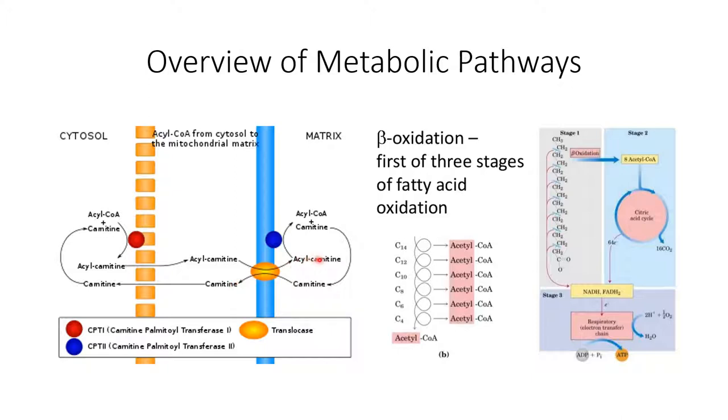Once inside the matrix, a second carnitine acyl transferase enzyme, CPT2, reverses the esterification between carnitine and fatty acyl-CoA. The free carnitine group is now free to translocate through the inner mitochondrial membrane through the translocase antiporter to bind with additional fatty acyl-CoA for further transport of fatty acids into the mitochondria.